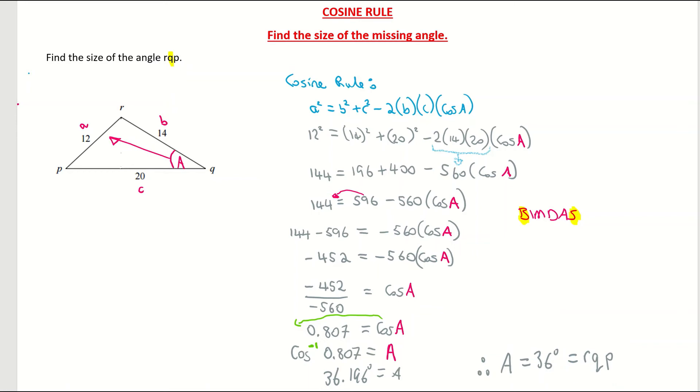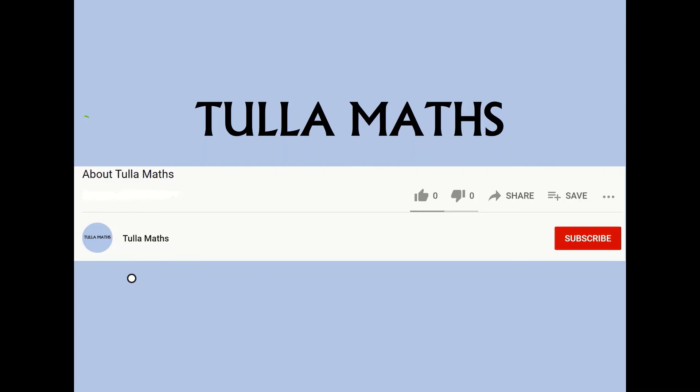And that's our cosine rule to find the size of the missing angle. Thank you for watching another tutorial video from TullaMaths. Make sure and subscribe.